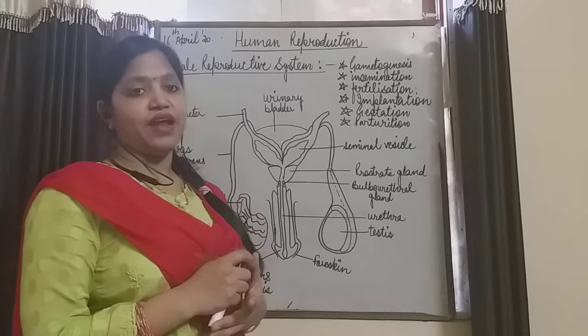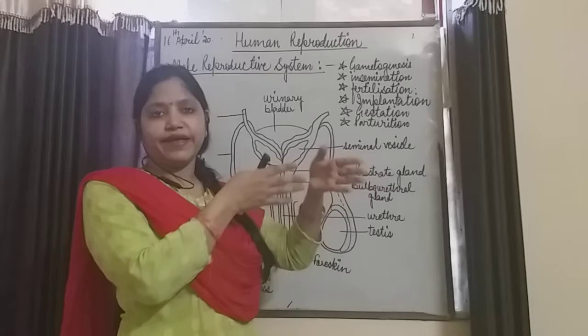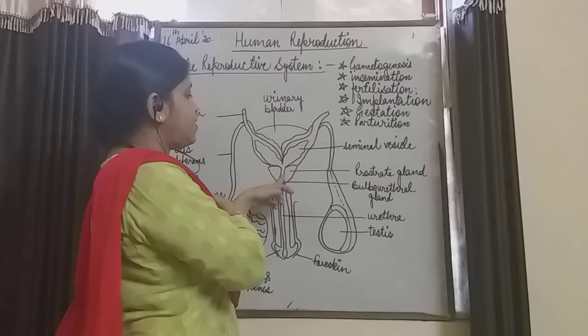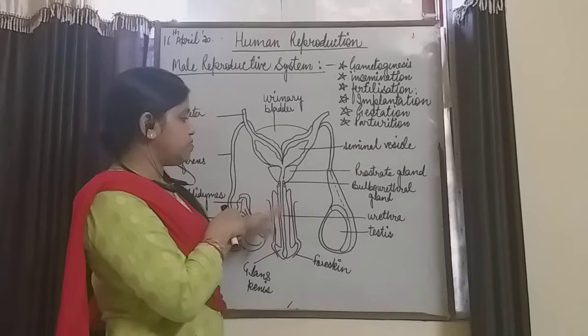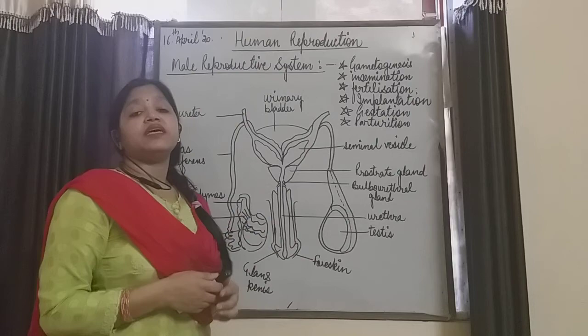Basically the male reproductive system is present in the lower abdominal cavity, in the pelvis region — the pelvis girdle or hip bone. It is situated parallel to the urinary system or excretory system. Here we can see the urinary bladder, which combines with the reproductive system through the urethra. Both systems are situated parallel in the human male in the pelvis region.